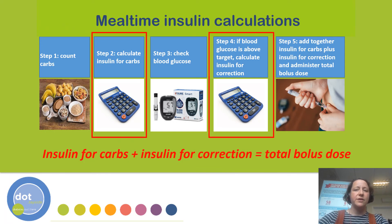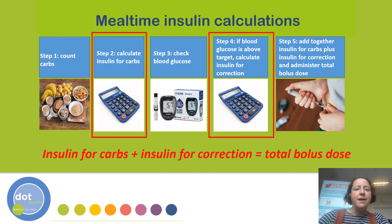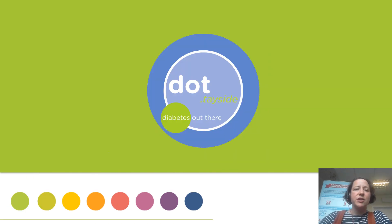This slide shows the five steps required to decide upon an appropriate mealtime bolus of insulin. In this presentation we focused on step 2 — deciding upon the appropriate dose to cover the carbohydrate content of the meal — and step 4 — deciding upon a correction dose added if your child's glucose is above target. Remember: insulin for carbohydrate plus insulin for correction equals total bolus dose. The ready reckoner tables and sensitivity factor tables are available on the DOT website, via the DOT app, or a member of the DOT team can provide them by email or on paper. Thank you very much.